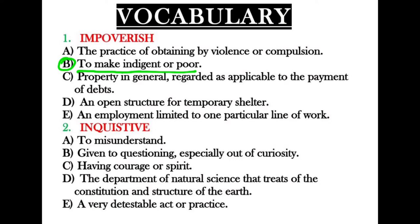The next word is 'inquisitive,' from the root 'inquire,' meaning to want to know. Inquisitive is an adjective meaning 'given to questioning, especially out of curiosity.' The option 'to misunderstand' is a verb and is incorrect. 'Having courage or spirit' describes brave or courageous. The correct answer is 'given to questioning, especially out of curiosity.'